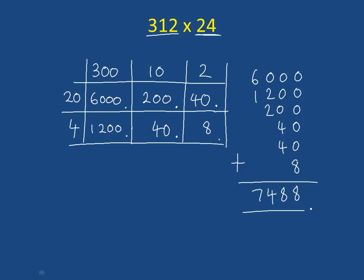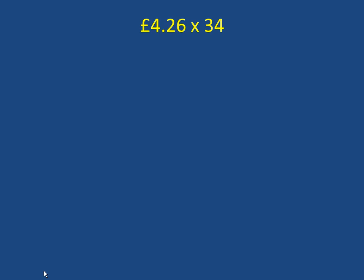So that was a slightly harder question. Now we're going to do a question involving money. So here we go. We have £4.26 multiplied by 34. So the way we would answer this question is we'd actually not do £4.26. We'd write that as 426 times 34. And we'll put the decimals in afterwards. So we've changed it to 426 times 34.